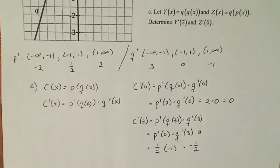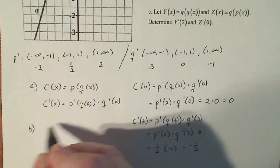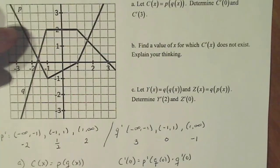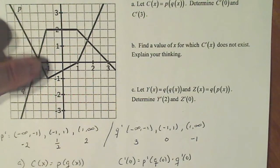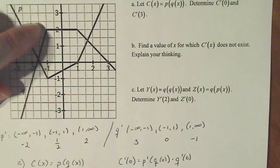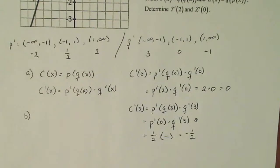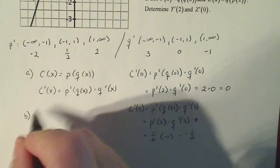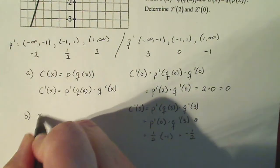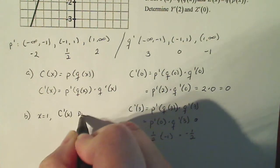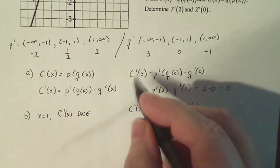For part b, we want to find a value of x for which c prime does not exist. I conjecture that at minus one and at one, it's not going to exist. So let's test x equals one — that's my conjecture that c prime of one does not exist.